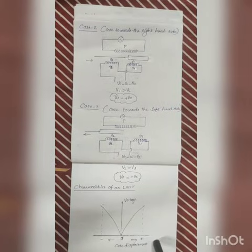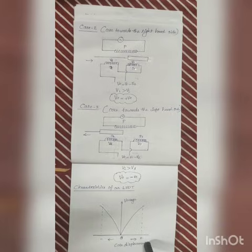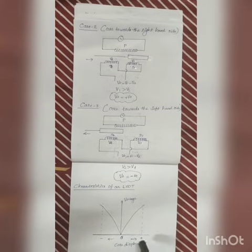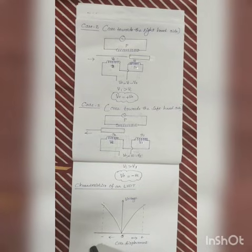In case 2, core towards right hand side, the magnitude is positive, so the polarity of the voltage is positive. When it moves towards the left hand side, the polarity of voltage is negative. Thank you.